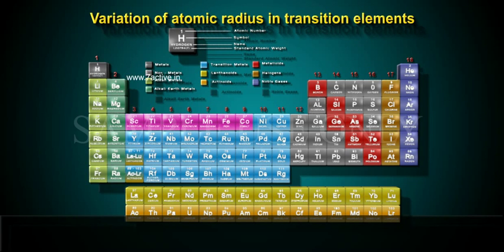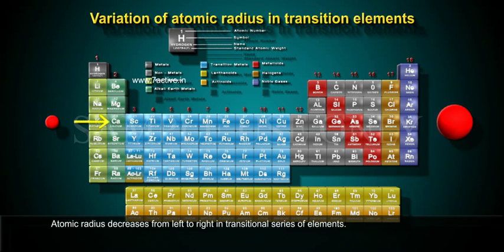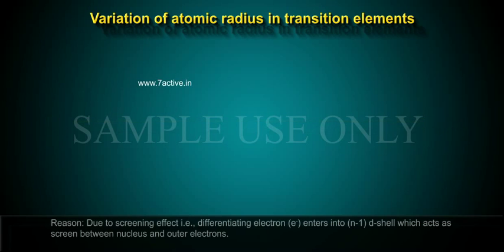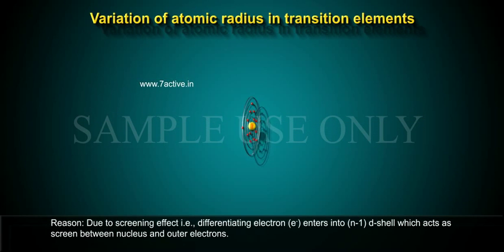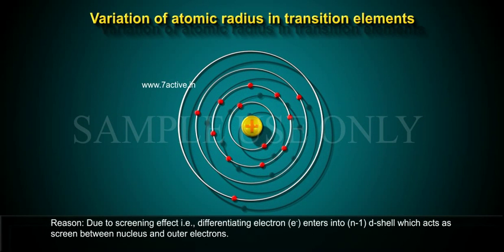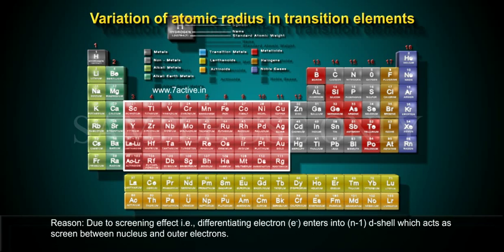Variation of atomic radius in transition elements: Atomic radius decreases from left to right in transitional series of elements. Reason: Due to screening effect, differentiating electron (e-) enters into (n-1)d shell which acts as screen between nucleus and outer electrons.